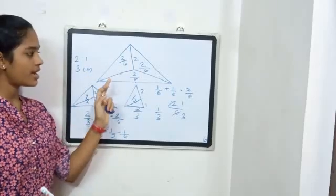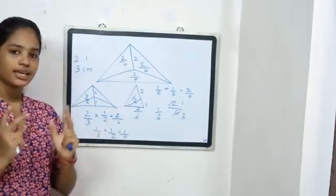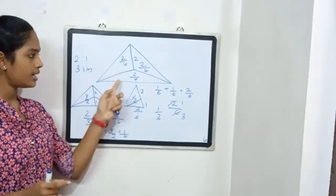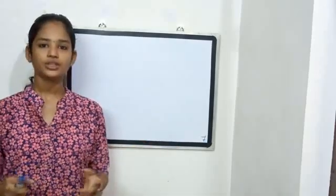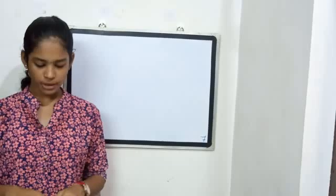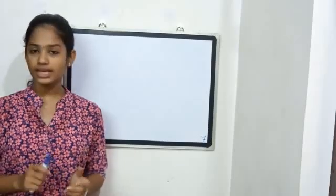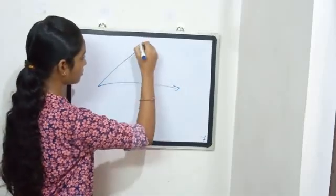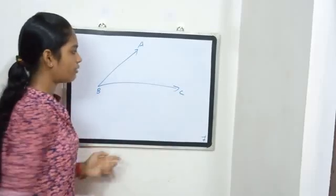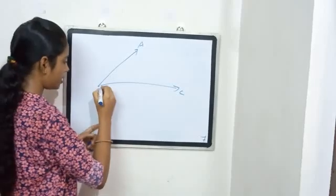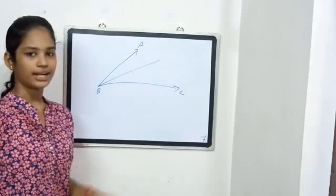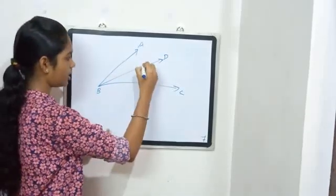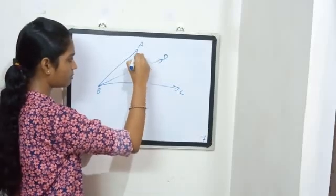Let's prove it. This triangle is one-third. This triangle is equal to one-third. This triangle is also equal to one-third. Each triangle is equal to one-third of the whole.